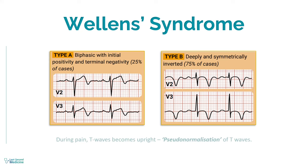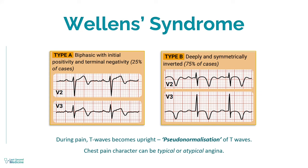An interesting point to note is that in patients having Wellens syndrome, upright T waves are expected during pain. This is called the pseudonormalization of T waves. And the character of the chest pain might be in the form of typical or atypical angina.